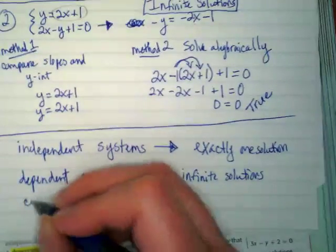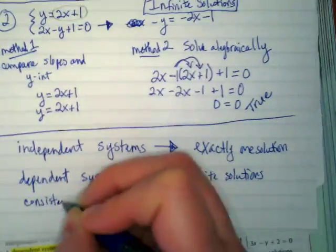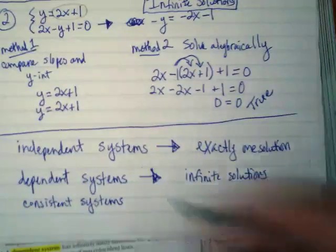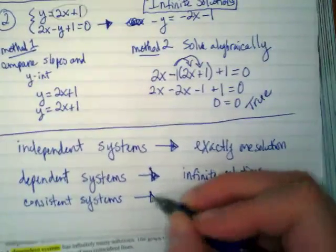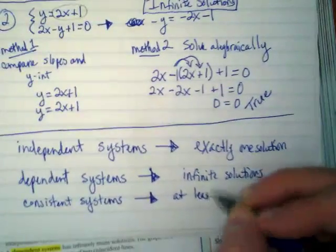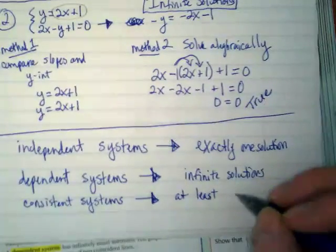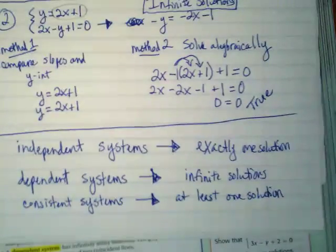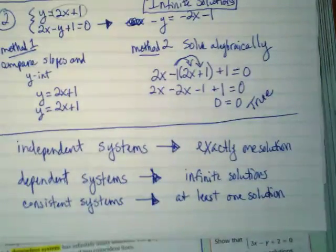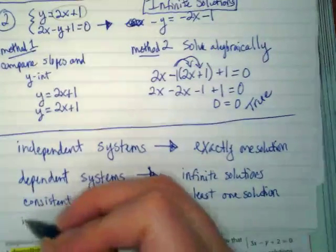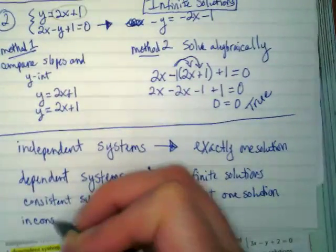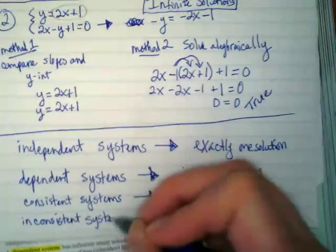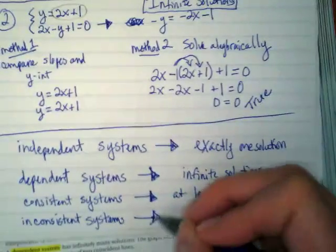Then there's also what's called consistent systems. Consistent systems have at least one solution. And inconsistent systems have no solutions.